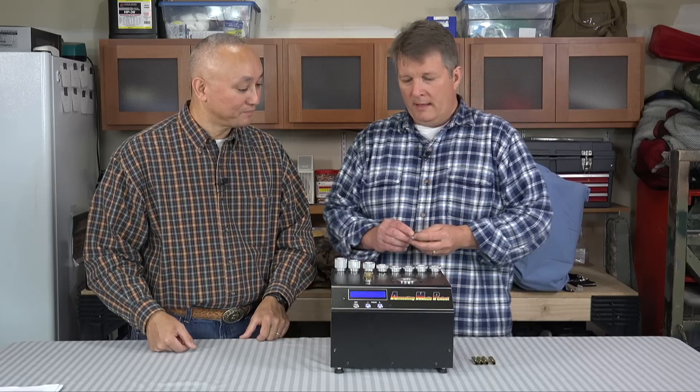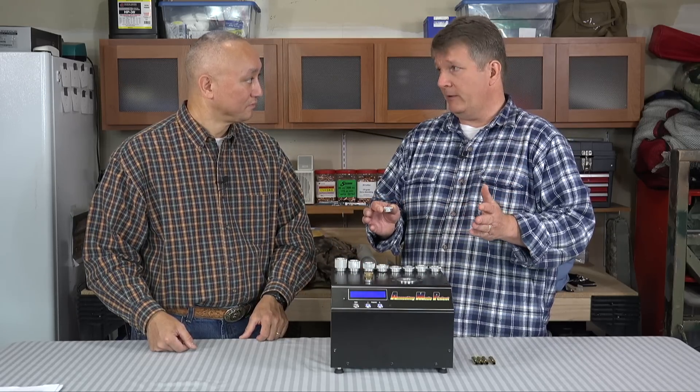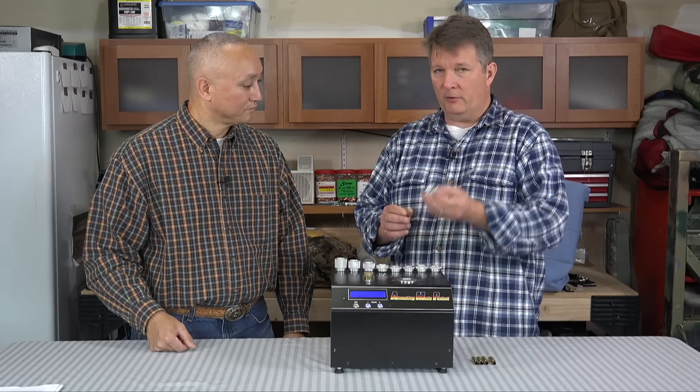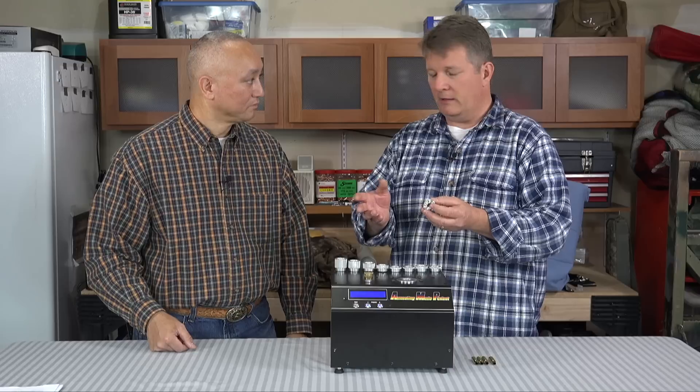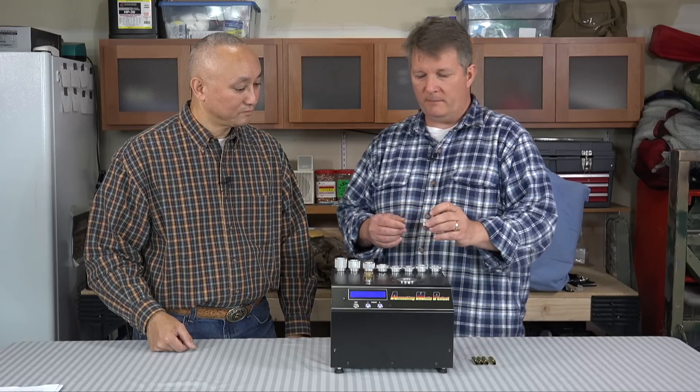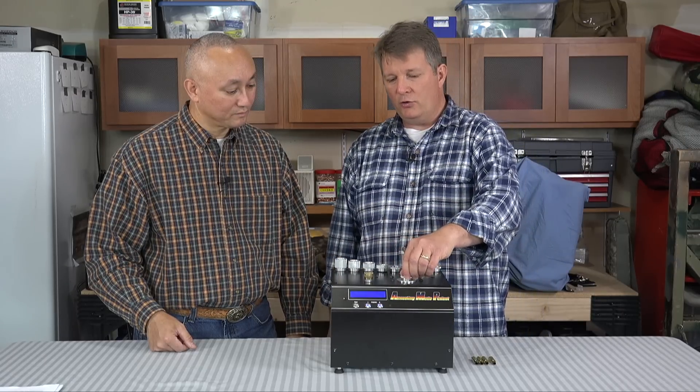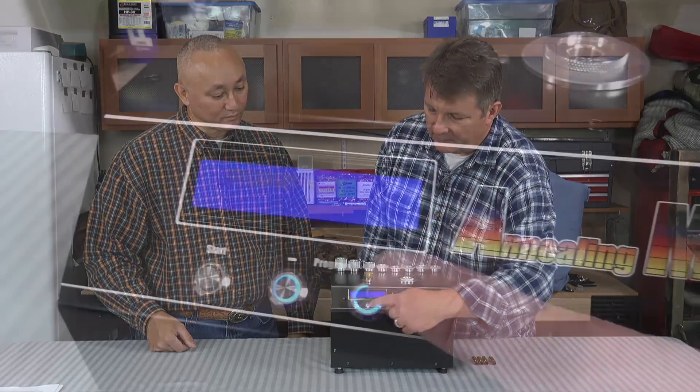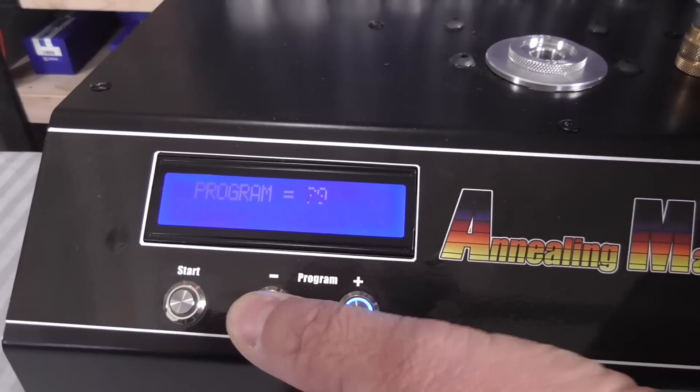Also these pilots position it within the induction coil just right. That's why you have different pilots for each type of cartridge. Each cartridge is different in terms of size, the thickness of the brass, where that neck and shoulder actually sits within this unit. So you need these in order to make sure it sits in the right spot.